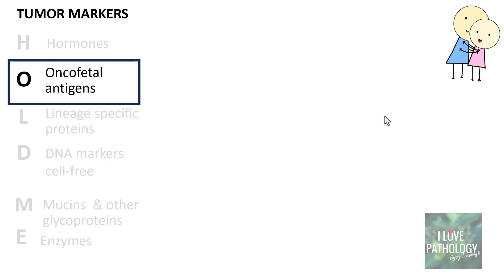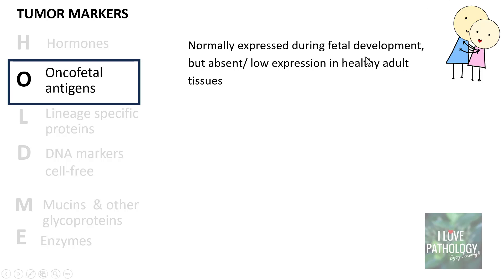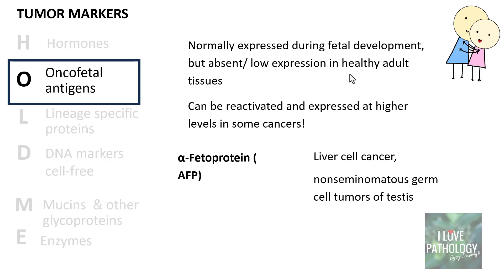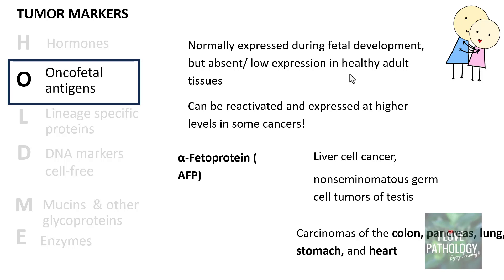Moving on to oncofetal antigens — 'onco' means cancer and 'fetal' refers to the fetus. These antigens are normally expressed during fetal development but absent or at low expression in healthy adult tissues; however, they can be reactivated and expressed at higher concentrations in some cancers. The most common example is alpha-fetoprotein (AFP), elevated in liver cell cancers and non-seminomatous germ cell tumors of the testes. The second important oncofetal antigen is carcinoembryonic antigen (CEA), elevated in carcinomas of the colon, pancreas, lung, and stomach.